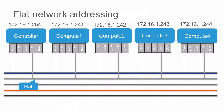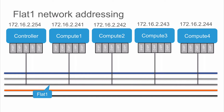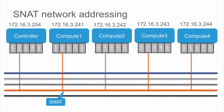The flat network you can reconfigure. Out of the box, the controller sits at 172.16.1.254, with 241, 242, 243, 244 reserved for each compute node. All devices must be on a common network. The same applies for flat 1 on the 172.16.2 network, and SNAT on the 172.16.3 network, following the same addressing theme. The internal control network — 172.16.10 — please do not reconfigure that. But flat, flat 1, and SNAT can be reconfigured to suit your networking needs.